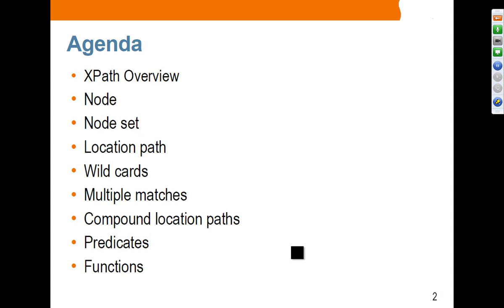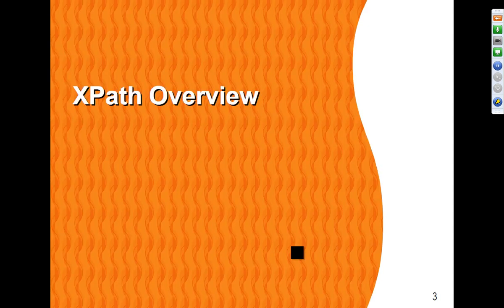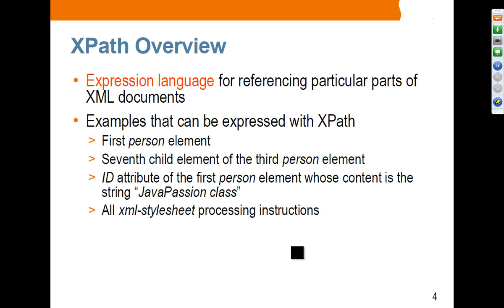XPath is an expression language — meaning XML language — for referencing particular parts of an XML document. You can use XPath with any XML document, including XML schema. Examples include referencing the first person element, the seventh child element of the third person element, or an ID attribute of the first person element whose content is the string 'Java Passion Class', or all XML stylesheet processing instructions.